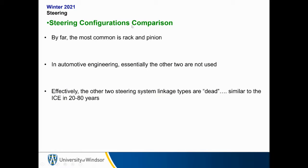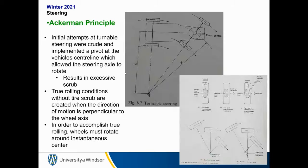In a steering wheel configuration comparison, by far the most common is rack and pinion. In automotive engineering the other two are essentially not used — they are effectively dead, similar to what will happen to the internal combustion engine in 20 to 80 years. Some people think by 2040 the internal combustion engine will be completely dead, though it's likely closer to 80 years. Rack and pinion is really the dominant design choice.